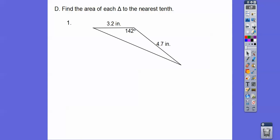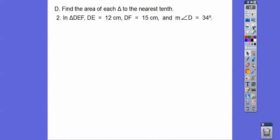So find the area of each triangle to the nearest tenth. Okay. So it's one half this times this times the sine of 142. Okay. So let's plug in 142 in our calculator. We get 0.6157 and then one half is 0.5. So when you multiply all those together, you get about 4.6 inches squared.